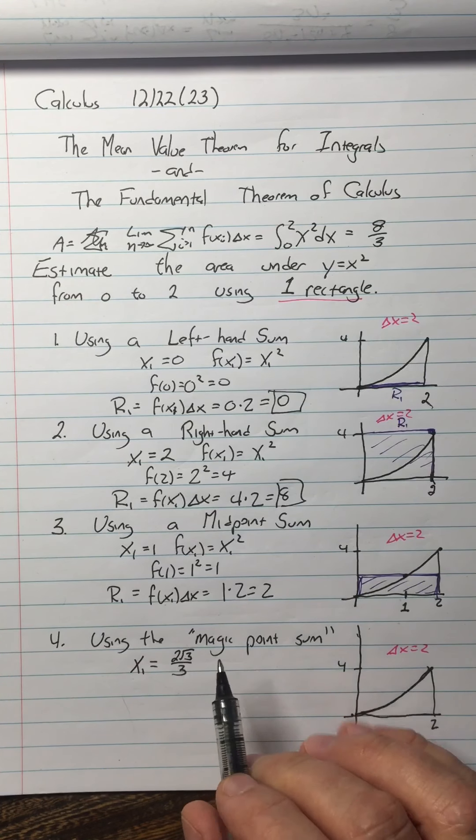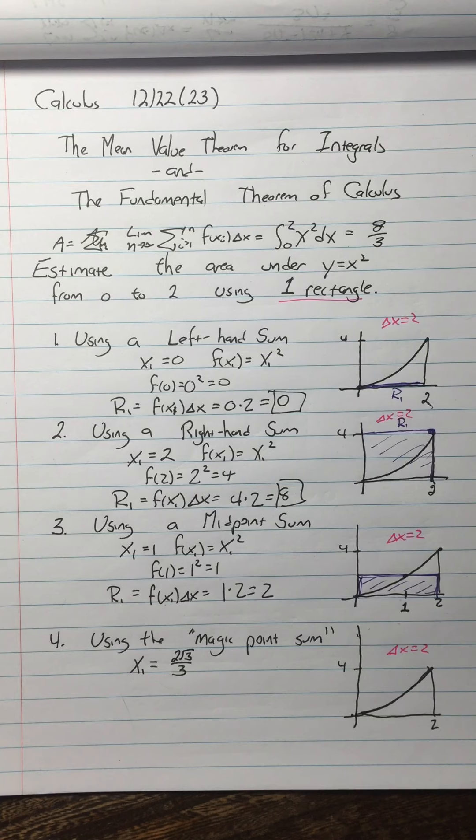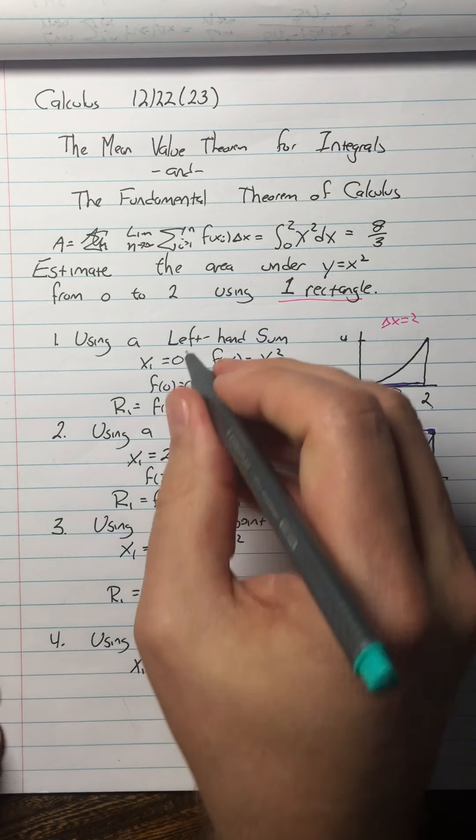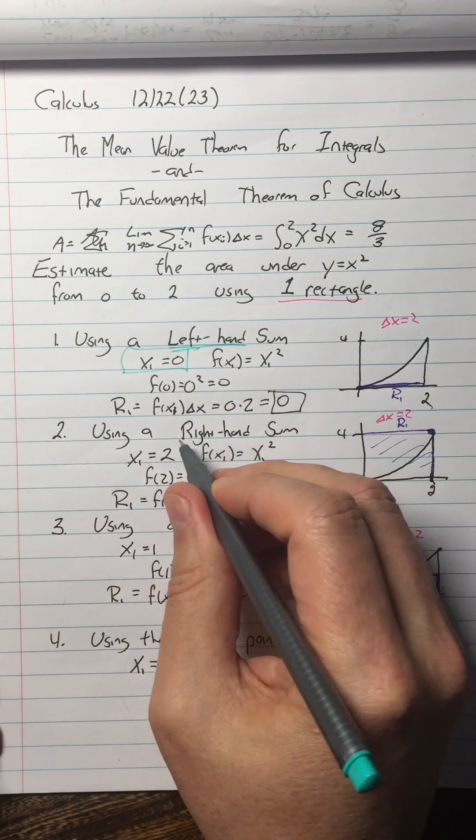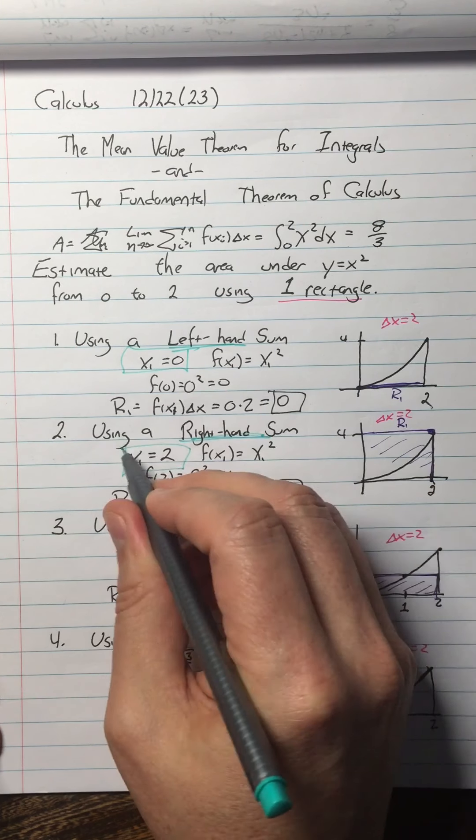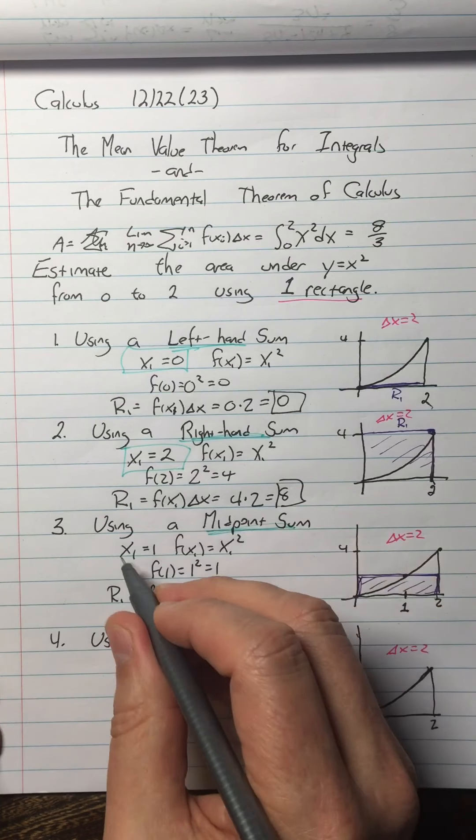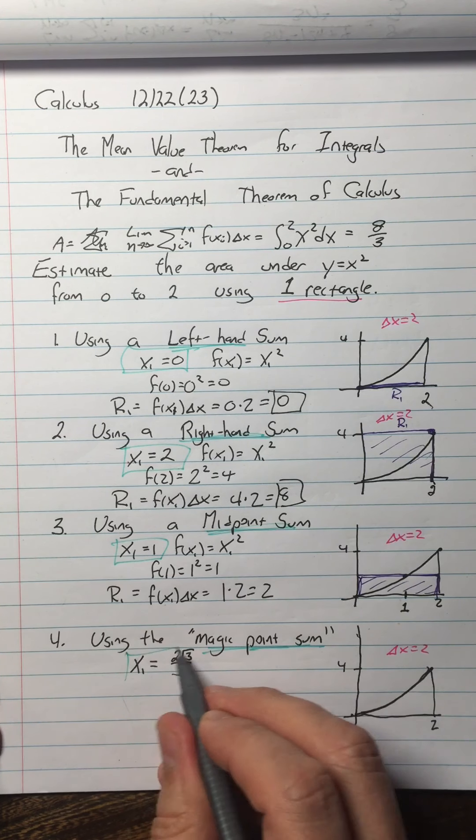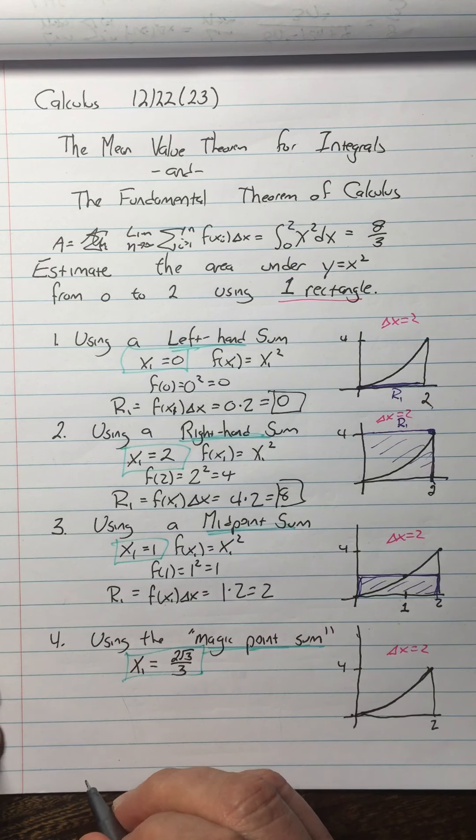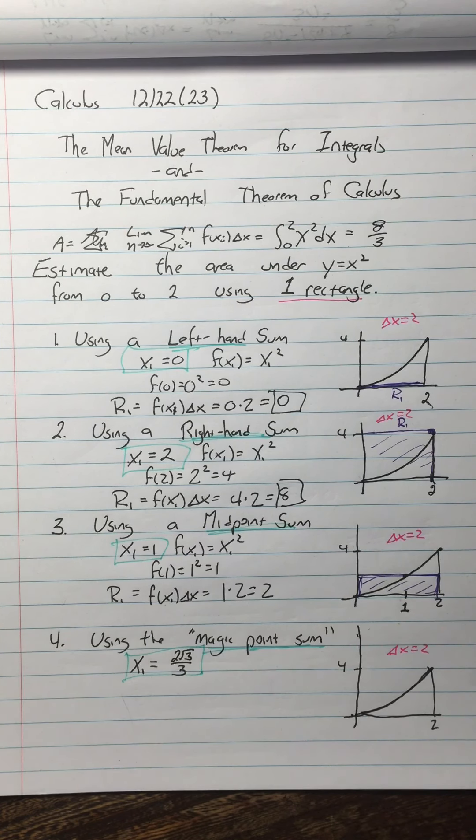Now, so I wanted to emphasize how the type of sum that you're doing really just determines what the x sub 1 is. So in this made-up magic point sum, I just picked the point x sub 1 equals 2 square root 3 over 3. So if you haven't figured this one out yet, use the same pattern, figure out what this area is now, and come back when you've got it.